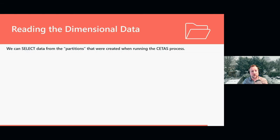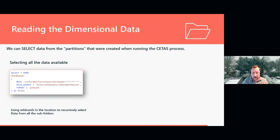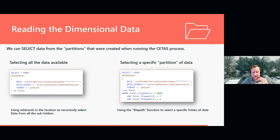When reading the dimensional data, I can select from the root folder and get all of the data available. I can also use the file path function to eliminate folders I don't want to read from — so if you have a BI tool further downstream that's incrementally loading data, this eliminates unwanted folders.